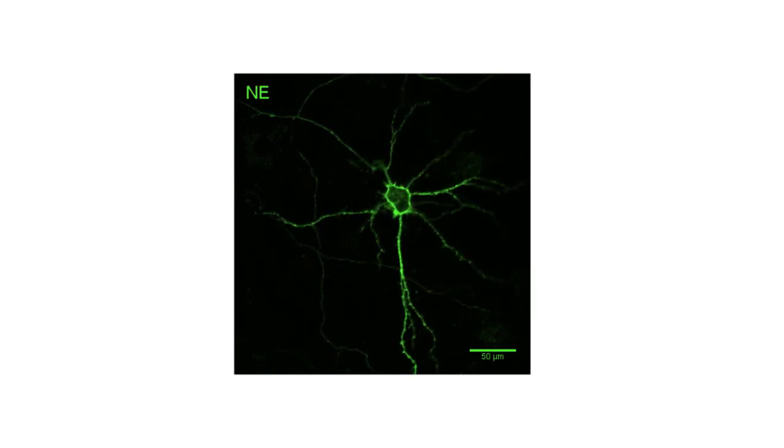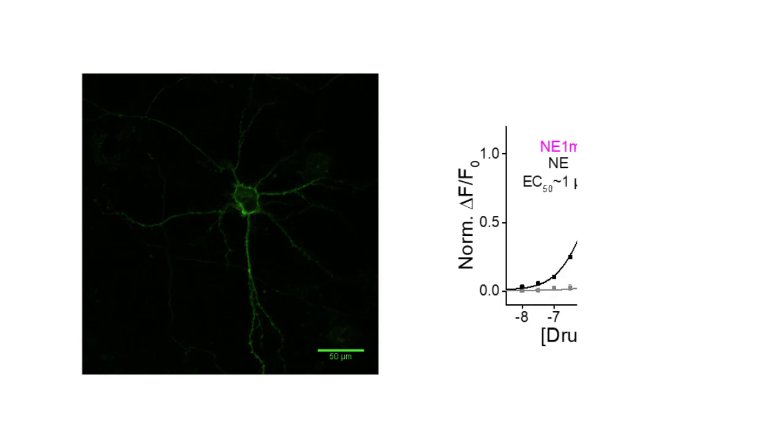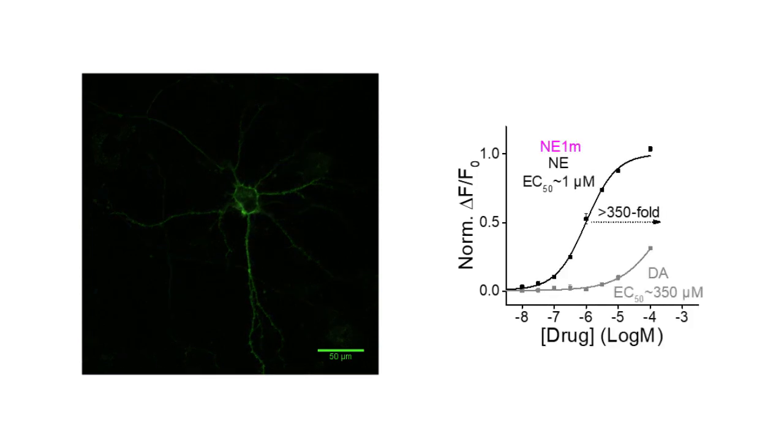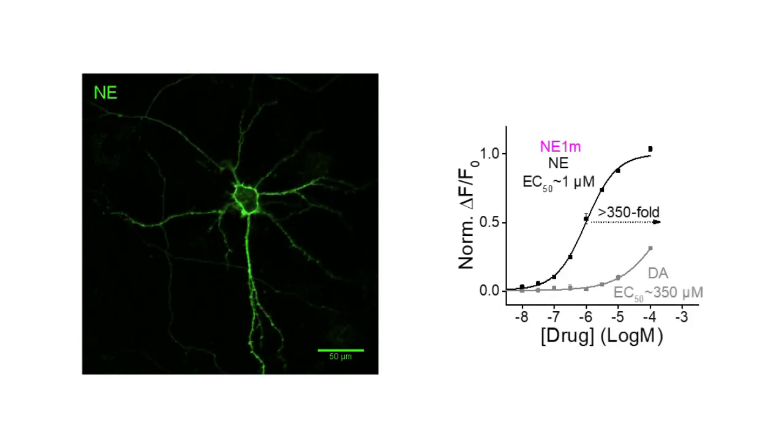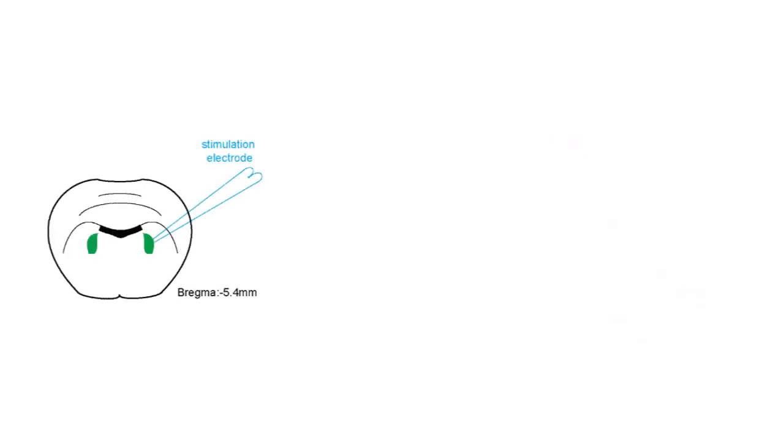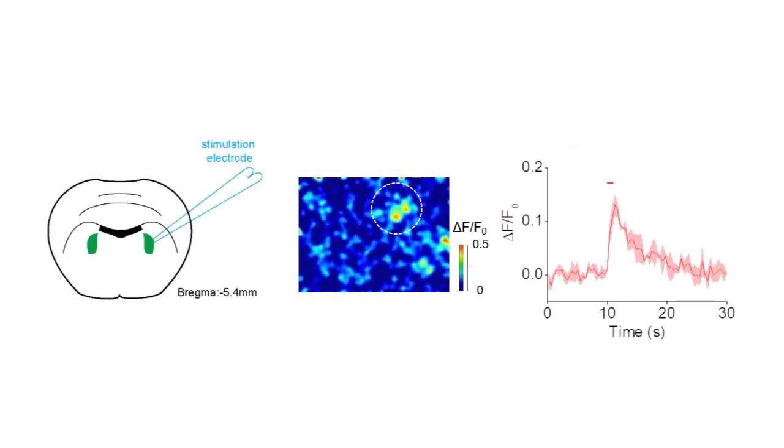Notably, the medium-affinity version GRAB-NE1M shows a 350-fold higher selectivity for NE versus dopamine.